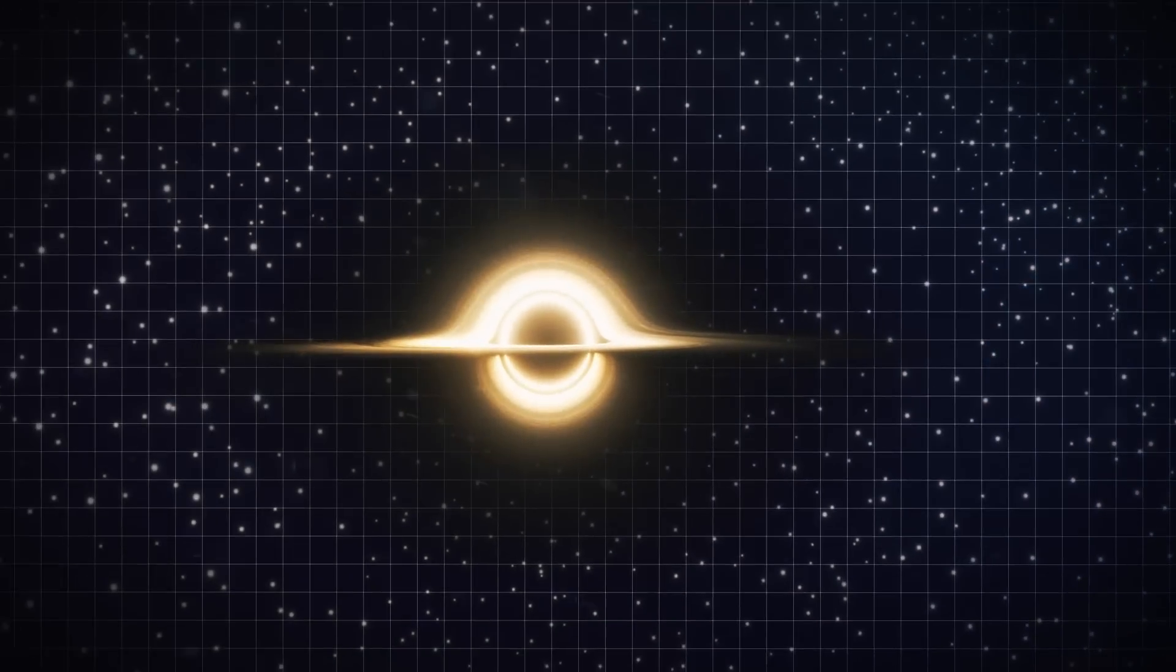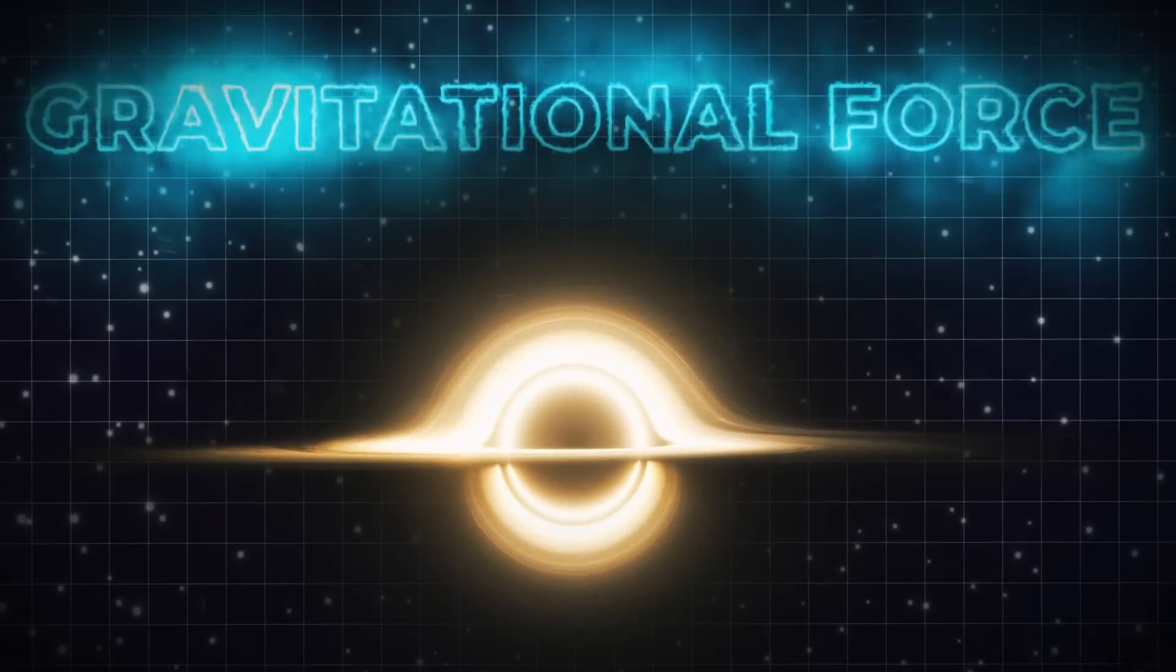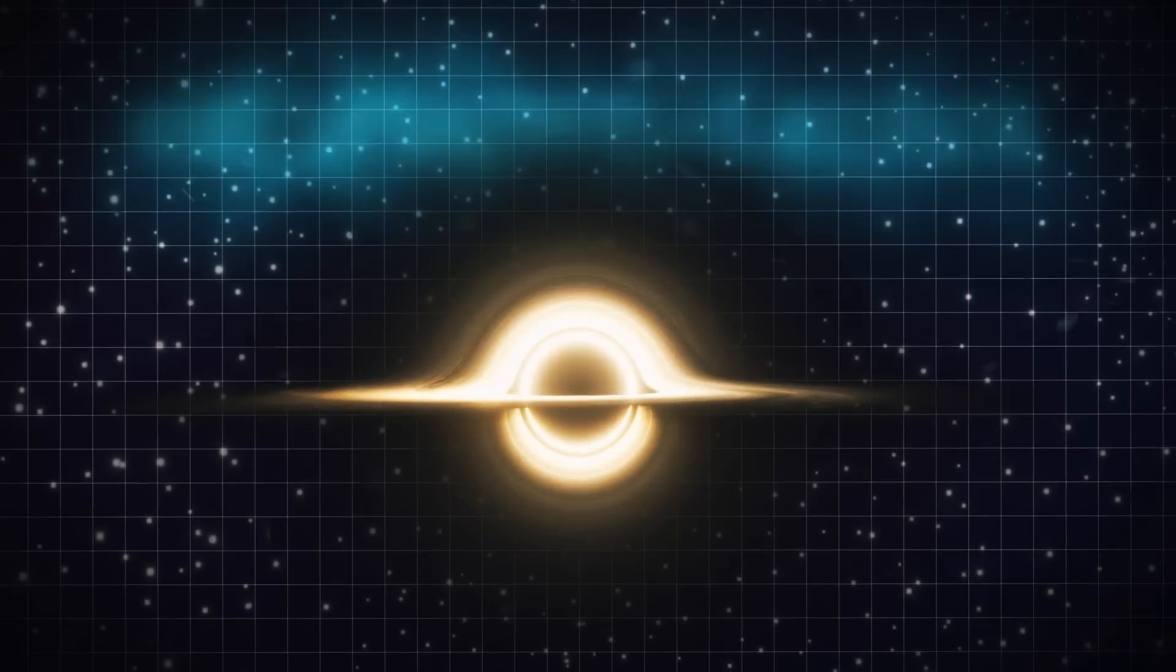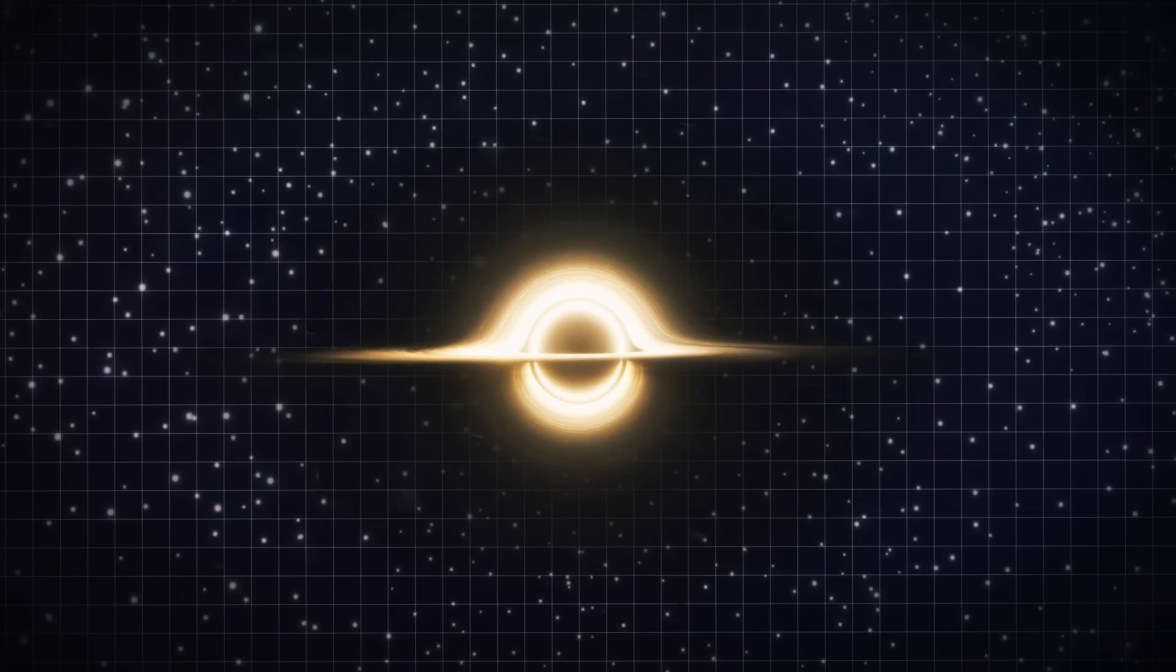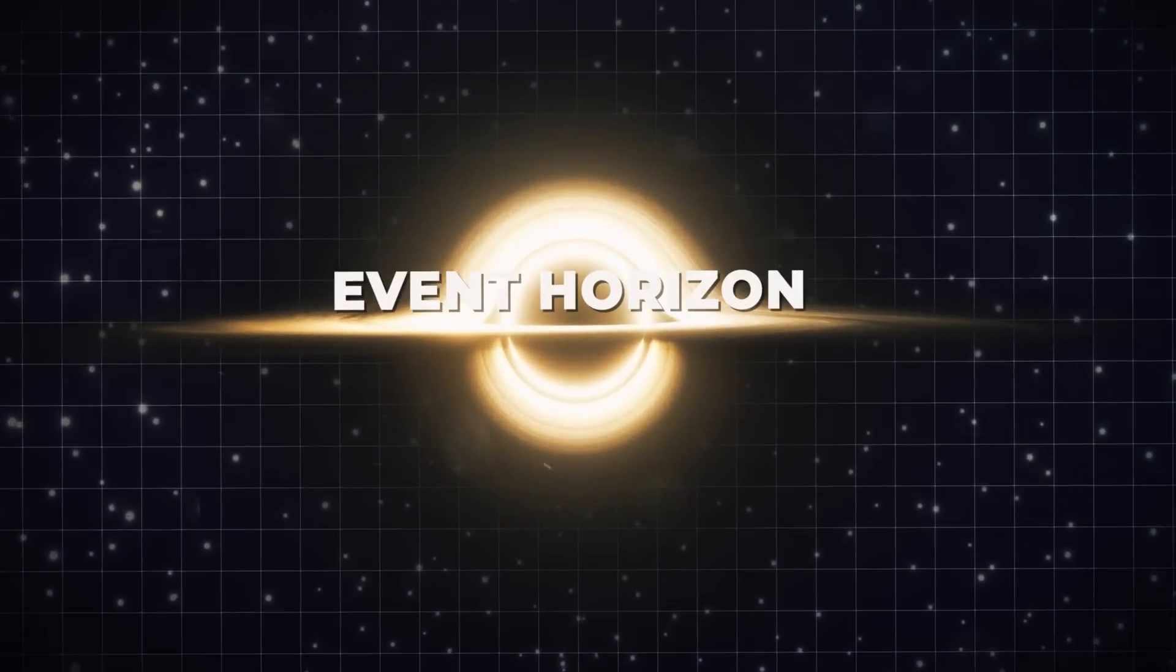As a result, there is a gravitational force that is so powerful that even light cannot escape. Consequently, a black sphere thus develops around all of that tightly packed stuff. This is the so-called event horizon.